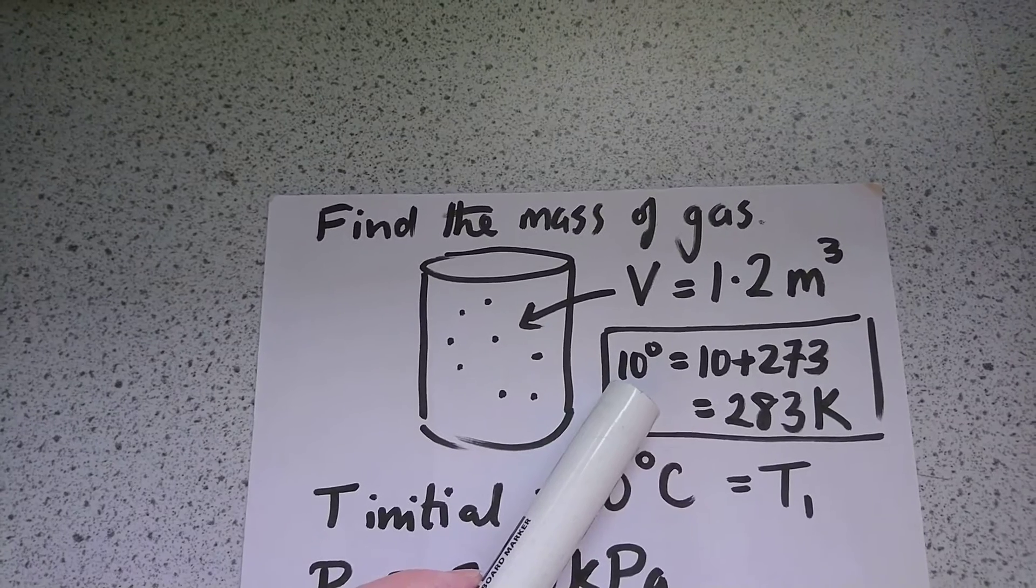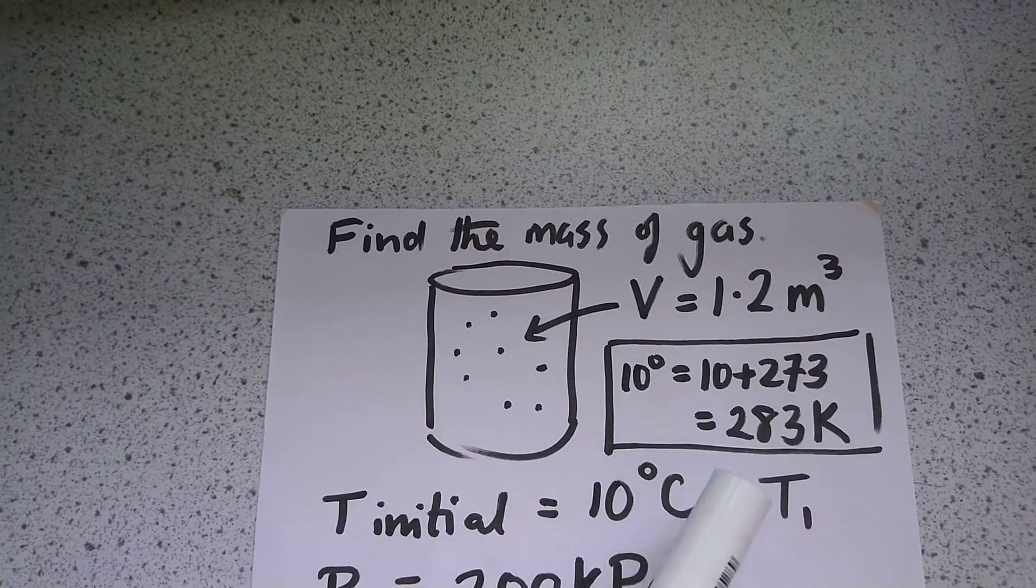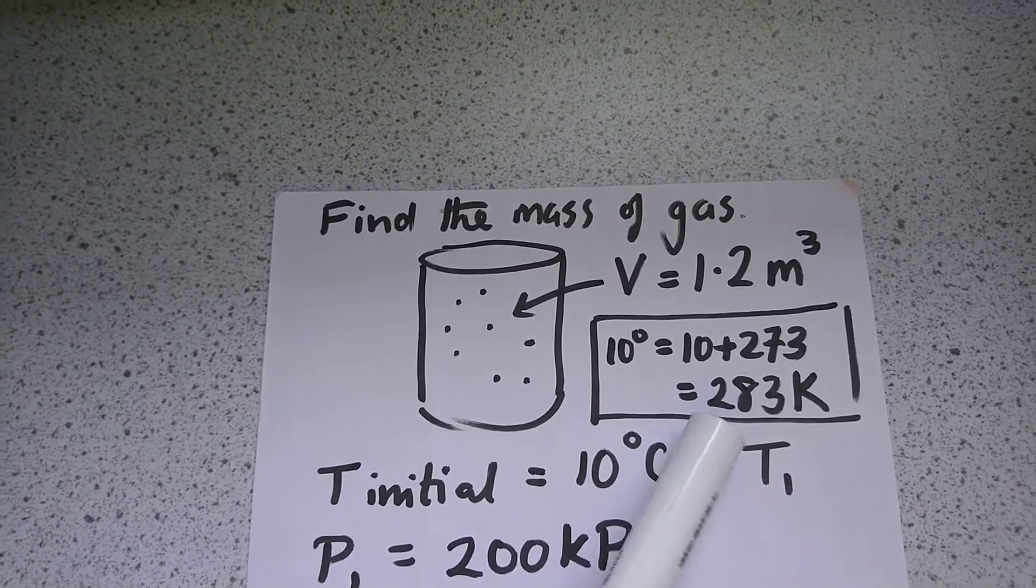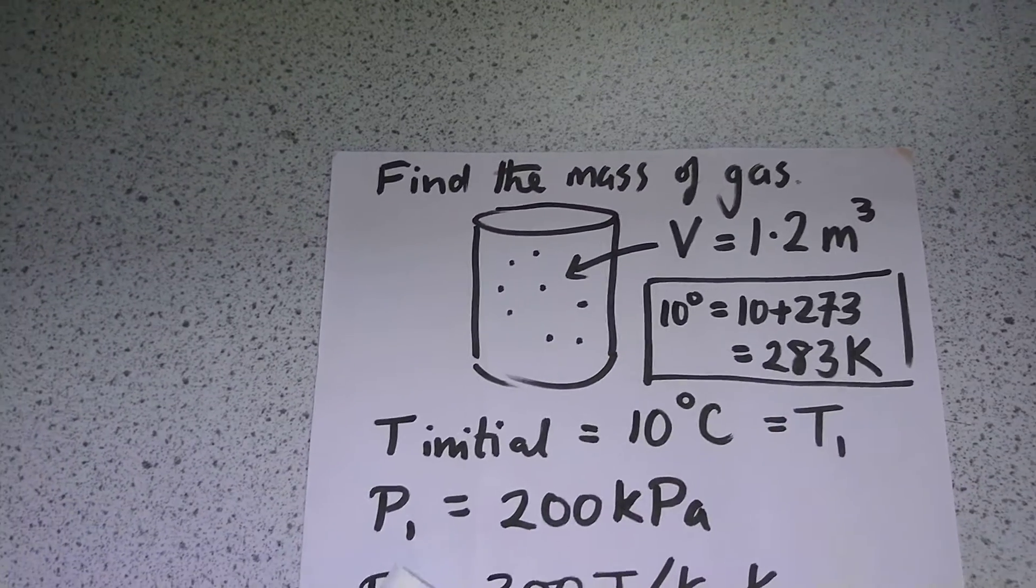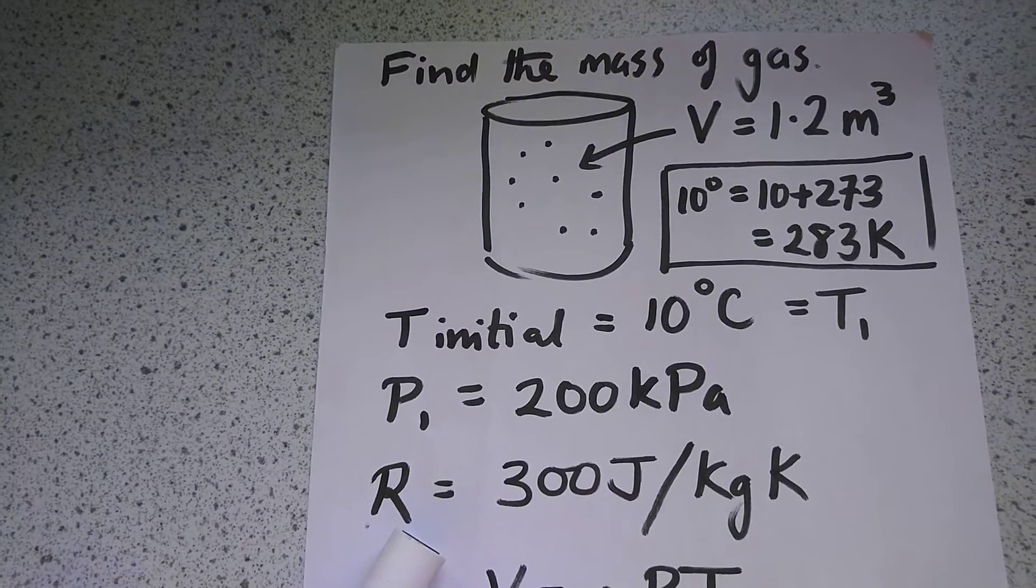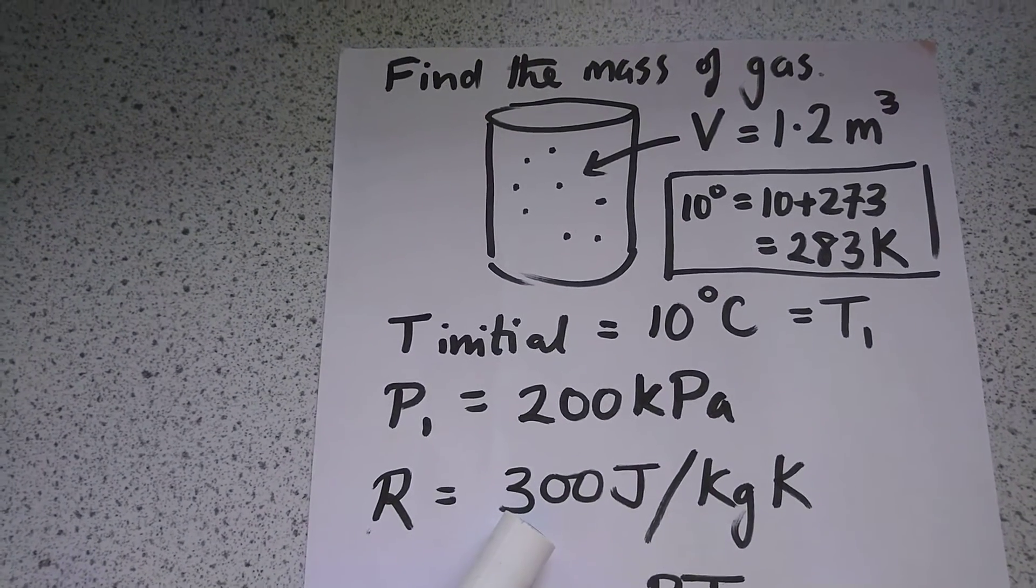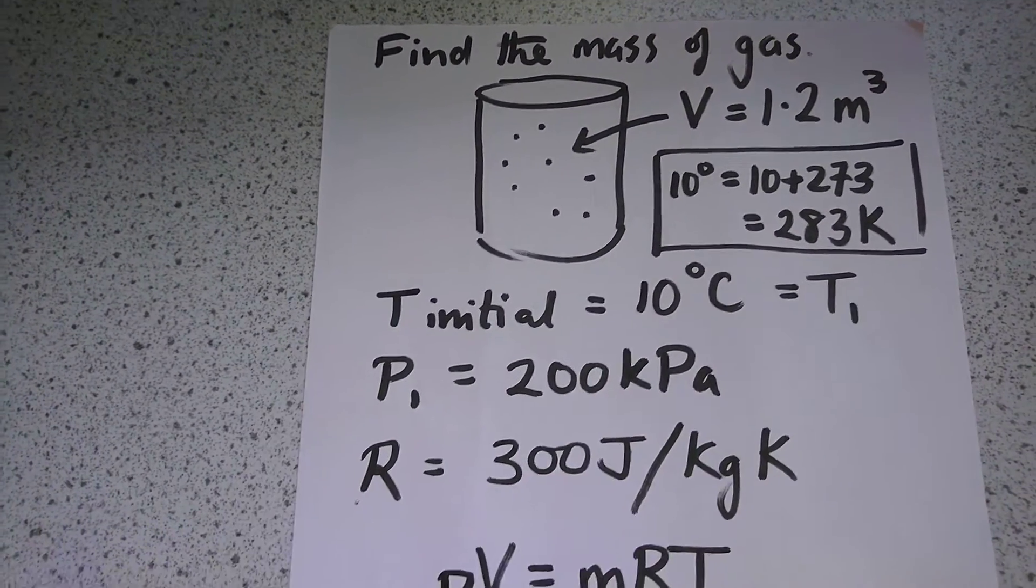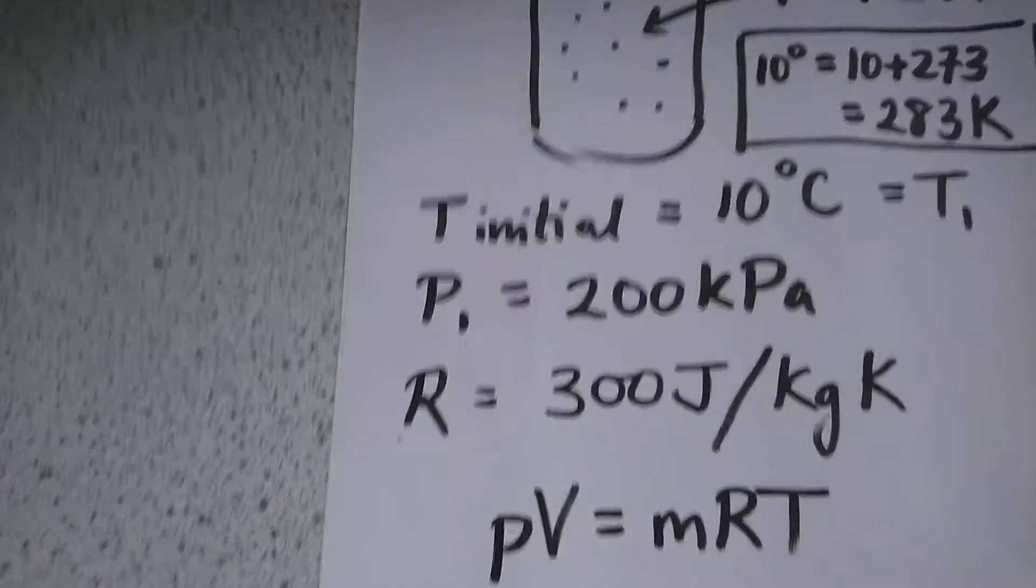We do that by adding 273, which gives us 283 Kelvin for T1. The pressure is 200 kilopascals and the specific gas constant is 300 joules per kilogram Kelvin, so we can now use the characteristic gas equation.